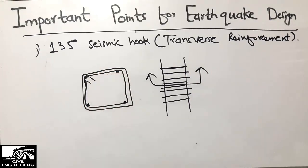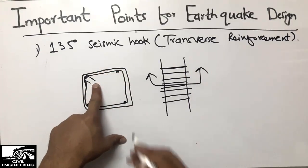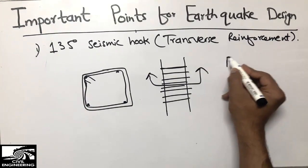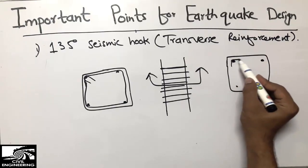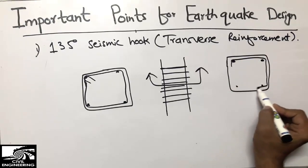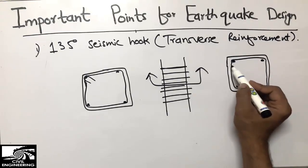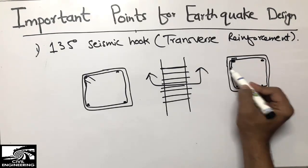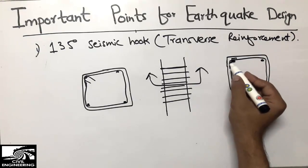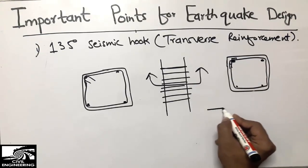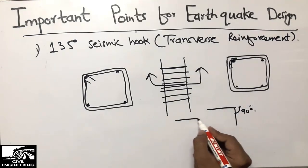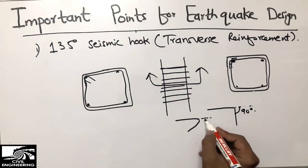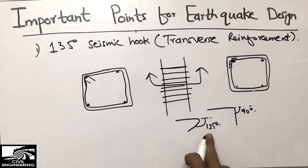This 135-degree hook is what we require. It should not be a 90-degree hook, which is what we commonly see in columns where the tie ends are bent at only 90 degrees. The 135-degree hook is also called a seismic hook.